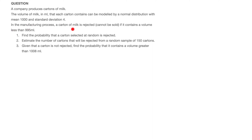In the manufacturing process, a carton of milk is rejected — in other words cannot be sold — if it contains a volume less than 995 milliliters. We're faced with three things to do. The two key parameters are the mean value mu = 1,000 milliliters and the standard deviation sigma = 4 milliliters.